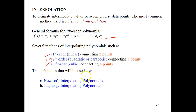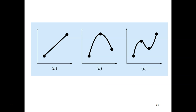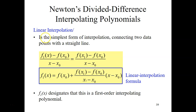The techniques we will use in this chapter are Newton's interpolating polynomial and Lagrange's interpolating polynomial. This figure shows the linear interpolation which connects two points, the quadratic, and the cubic — so first order, second order, and third order interpolation. Let's look at the first one, which is linear interpolation.